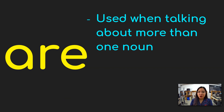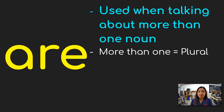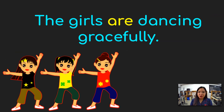Next. For the word "are," it is used whenever we are talking about more than one noun. When we say more than one, we are talking about plural. Whenever we have plural nouns or more than one noun, we are going to use the word "are." For example, "The girls are dancing gracefully." Earlier there was only one girl, but now we have one, two, three — there are three girls, and three is more than one. So we are going to use the word "are."